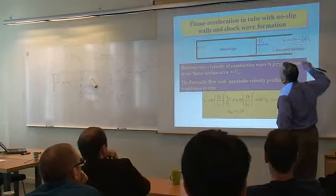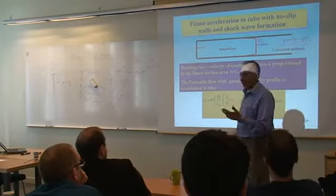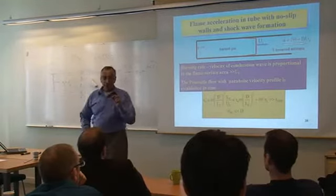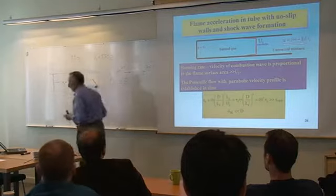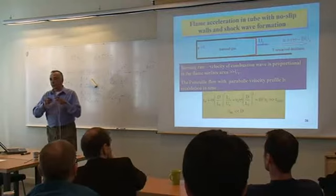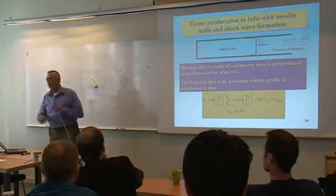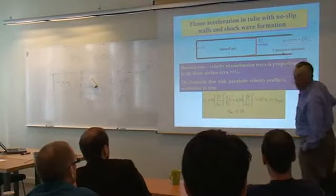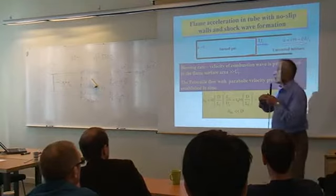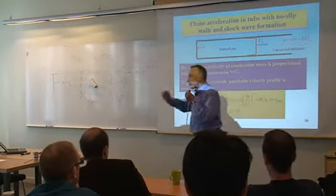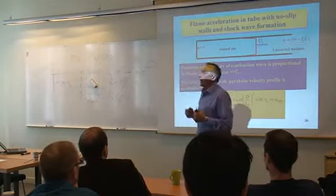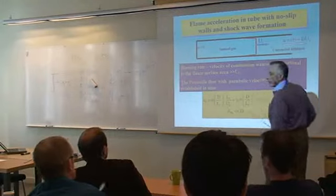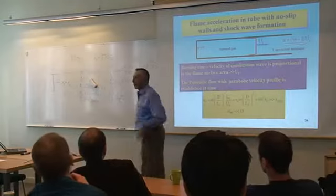The velocity of the flame front consists of the normal velocity of the flame plus the velocity of the flow which is drifting the flame ahead. Because of this, the flame requires the same shape as the velocity profile ahead, so the flame front will be stretched along the boundary layer. Here, L_F is the thickness of the flame front.